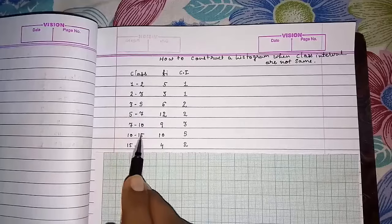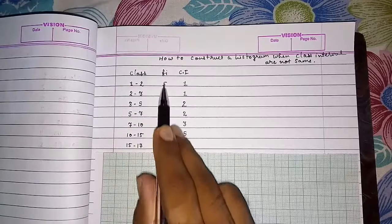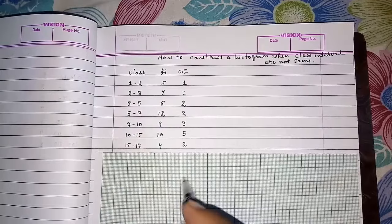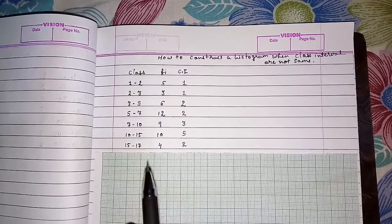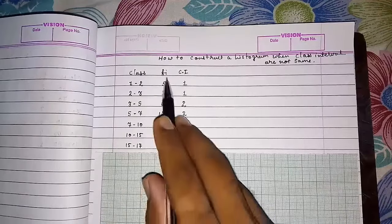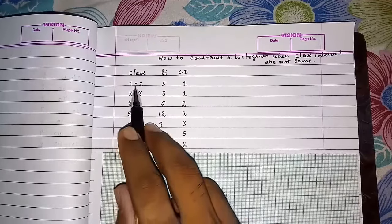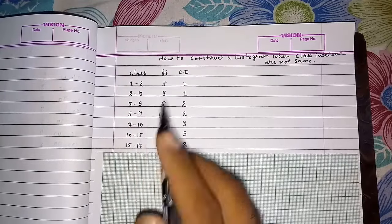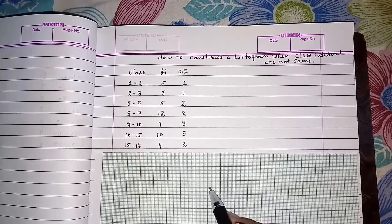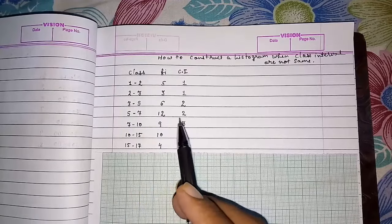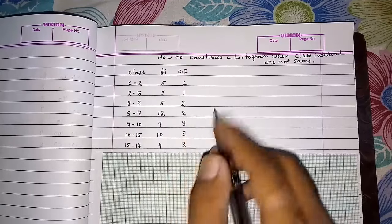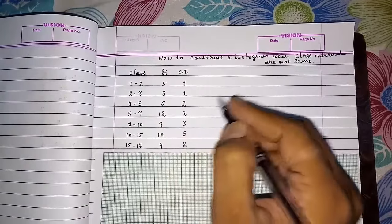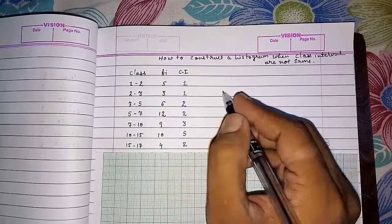When class intervals are different, we cannot directly compare their frequencies. So if we will draw its graph also, then the comparison will be wrong. So what we have to do? We have to find a new frequency that will divide all the classes equally. And then the graph will also change. Here we will not get simple bars, we will get different bars. This frequency will not work, so we have to find out new frequency.